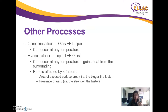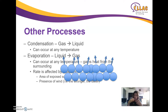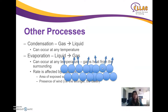Factor two: the presence of wind — the stronger the wind, the faster the rate of evaporation. When particles want to escape, the second layer can't escape if the first layer is still there. Wind blows the first layer away so the second layer can escape. Imagine blowing these particles away so that the next level can escape.